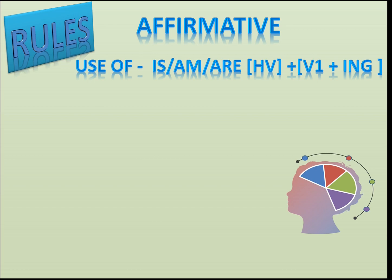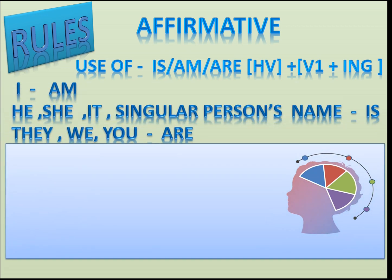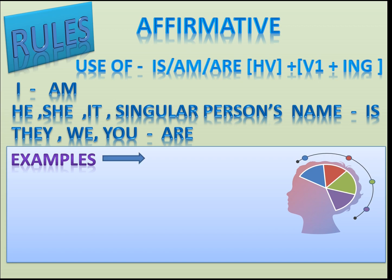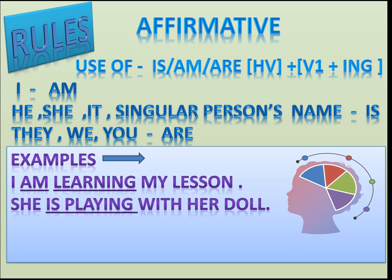The original form of the verb — that is the first form of the verb — is used, and we add -ing with it. For example: subject 'I', helping verb 'am', verb 'learn' with -ing added. The sentence is: 'I am learning my lesson.'